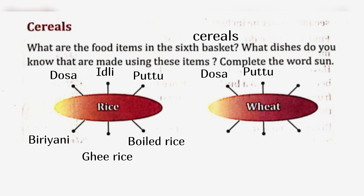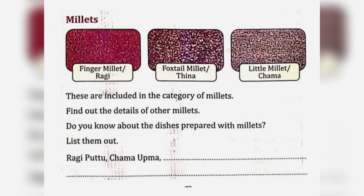Using wheat we can also make Chapati, Bread, Cake, Biscuits. Millets: Finger millet, Foxtail millet, Little millet — these are included in the category of millets.